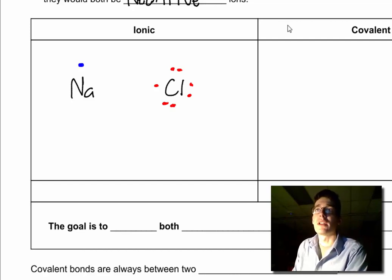In ionic bonding, sodium is going to donate its one valence electron to chlorine, into this empty spot right here. We get a sodium plus one ion. It has no more electrons.